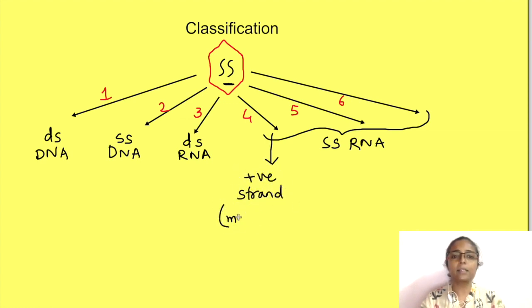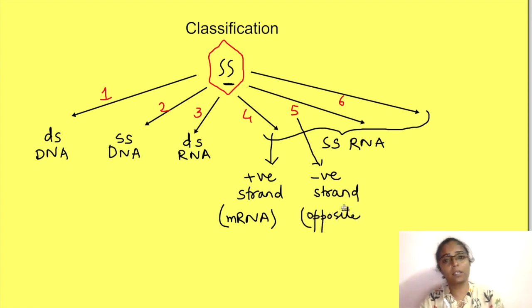That is RNA same as that of mRNA which can be directly translated into proteins. While in class fifth, the single stranded RNA has opposite polarity to that of mRNA. So these RNAs need to be first converted to positive sense RNA which can then be translated to proteins. It is not direct translation.